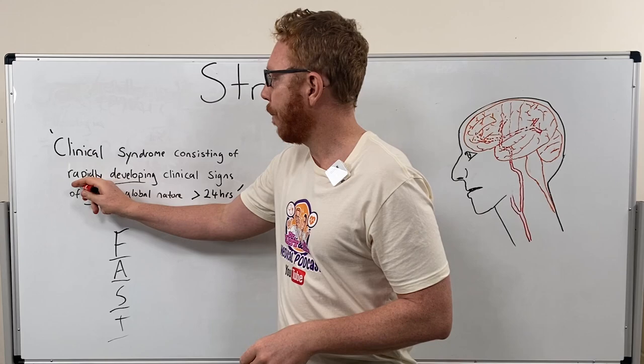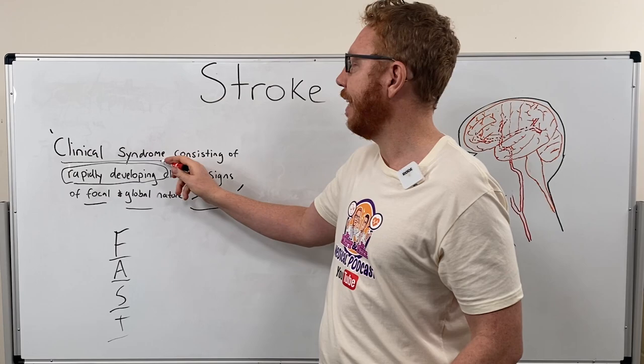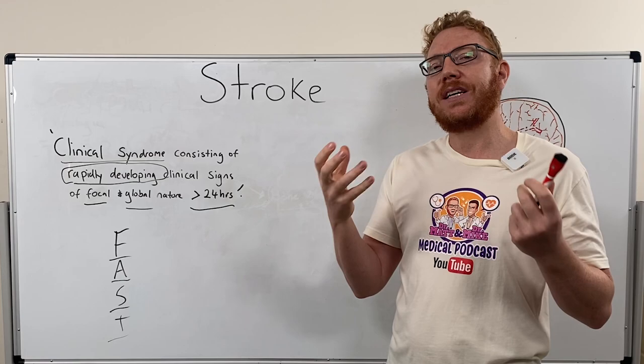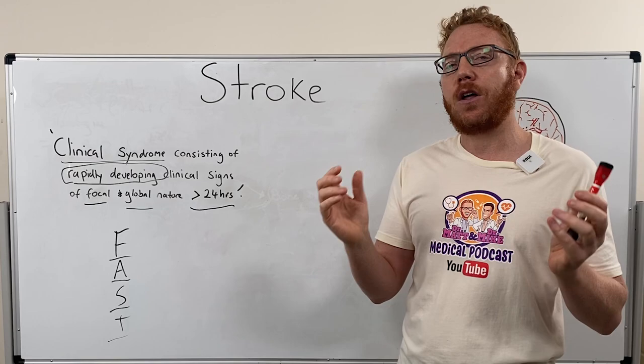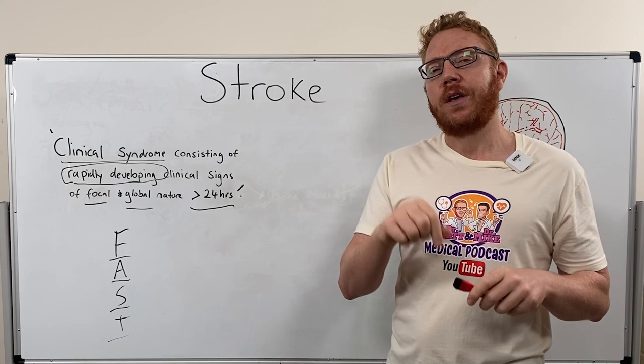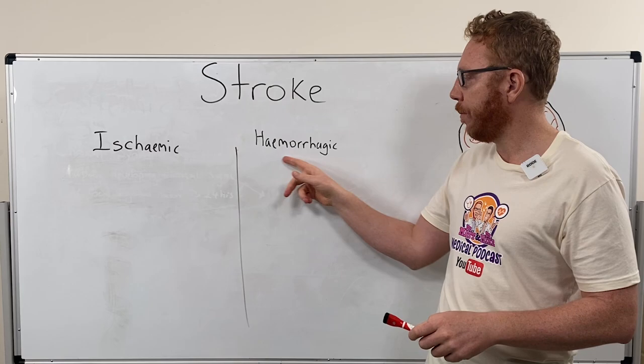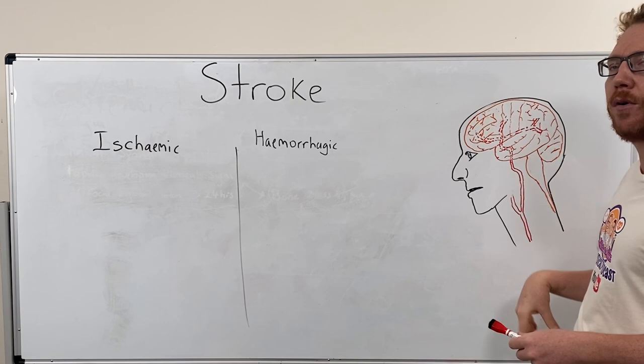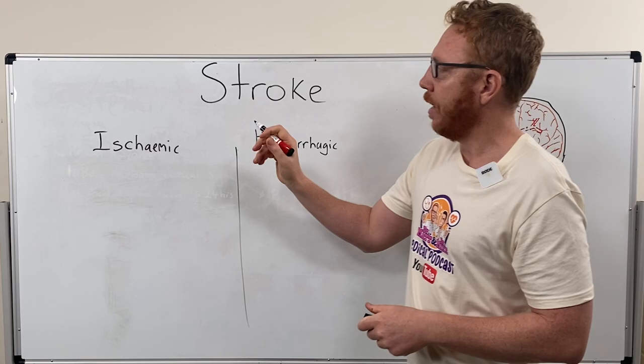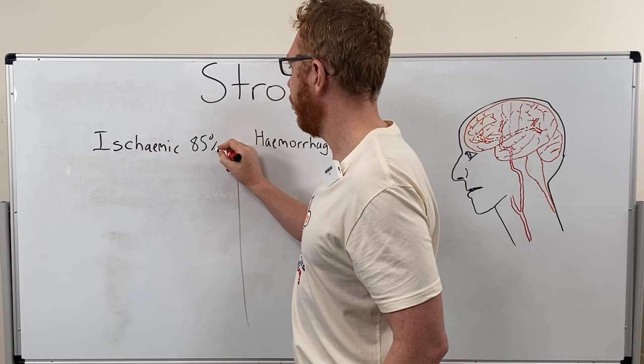And finally we have the term 'clinical syndrome' — a cluster or constellation of signs and symptoms that come about from an underlying cause. The underlying cause of stroke is either ischemic or haemorrhagic. Ischemic refers to a blockage in a blood vessel going to the brain, and haemorrhagic means there's a burst blood vessel in the brain. In terms of proportion, 80 to 85% of all stroke is ischemic-based, whereas 15 to 20% is haemorrhagic-based.